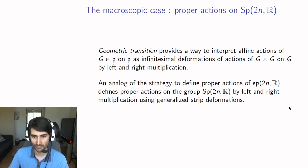You do generalized strip deformations—the same thing I said before—except instead of taking tangent vectors to the group which map the convex set inside itself, you take group elements which map the convex set inside itself to make every element more contracting, and then you get a proper action of g cross g on g.